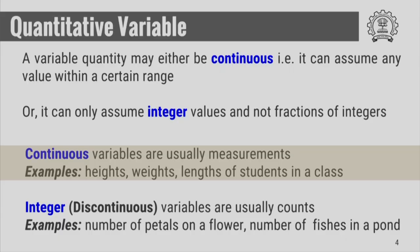Continuous variables are usually measurements. Examples include heights, weights, and lengths of students in a class. If you measure the height, weight, or length, different students will have different values, and these would not be whole numbers.